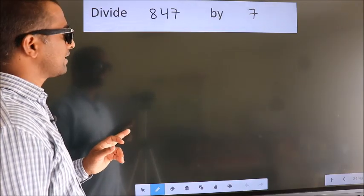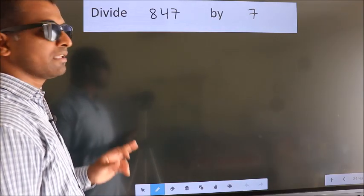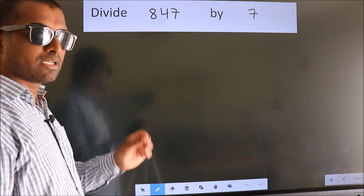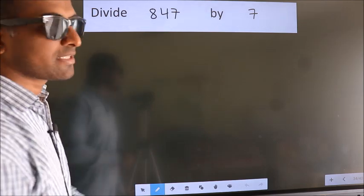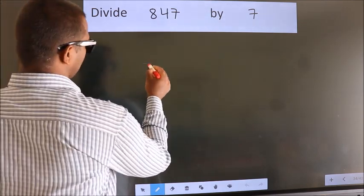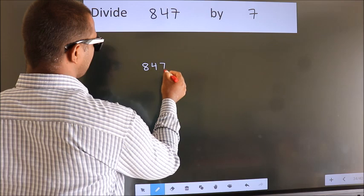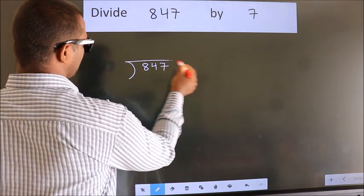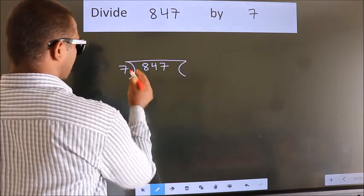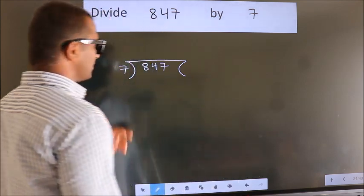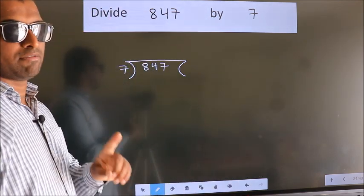Divide 847 by 7. To do this division, we should frame it in this way. 847 here, 7 here. This is your step 1.